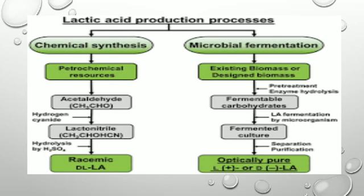Lactic acid production can be divided into two types: chemical synthesis and microbial fermentation. In chemical synthesis, petrochemical resources are used to form acetaldehyde (CH3CHO). Acetaldehyde reacts with HCN to form lactonitrile (CH3CHO·HCN), which is then hydrolyzed by H2SO4 to form a racemic mixture of dextrolactic acid and levolactic acid.